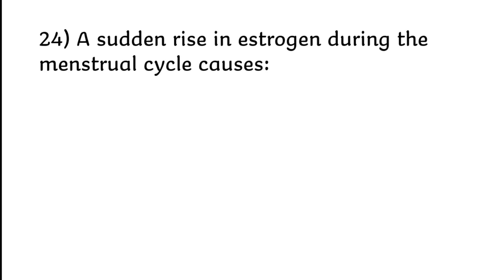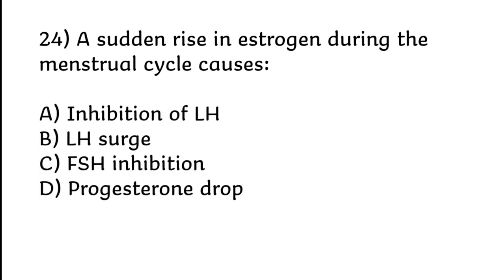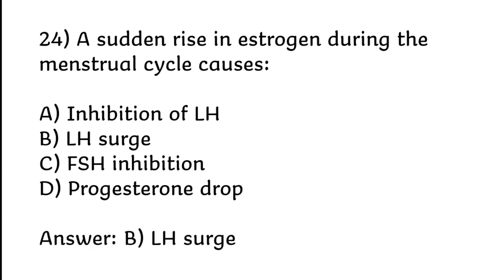A sudden rise in estrogen during the menstrual cycle causes: A) Inhibition of LH, B) LH surge, C) FSH inhibition, D) Progesterone drop. Correct answer is option B: LH surge.